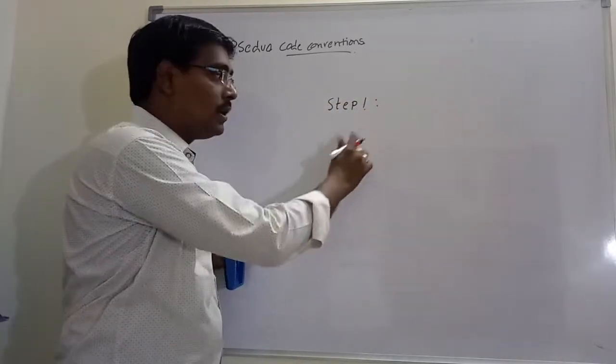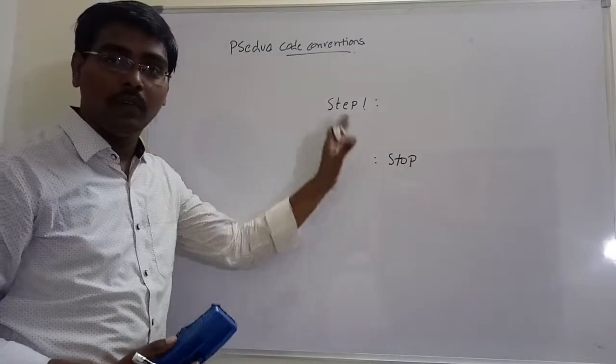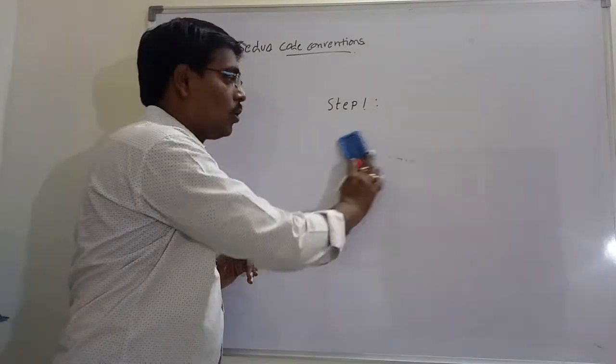Generally, we are writing the algorithm as step 1 start, step 2 read A B, step 3 perform operation, and last step stop. This is the general way for writing the algorithm.